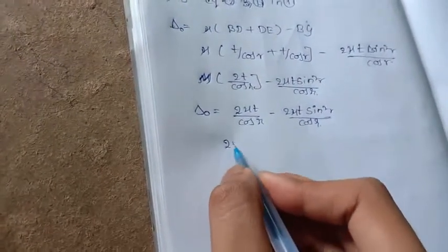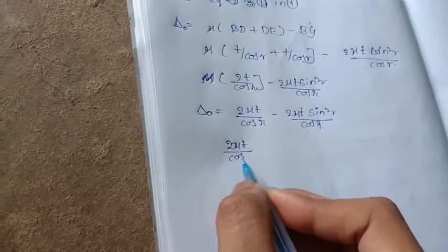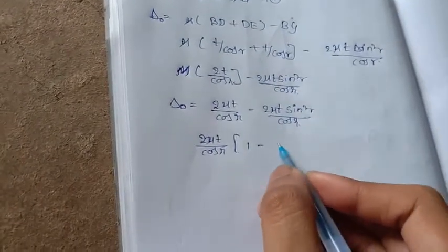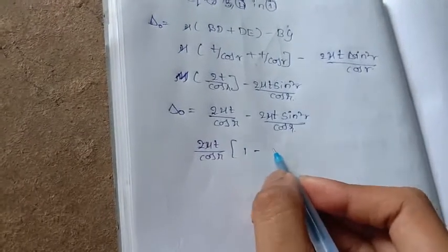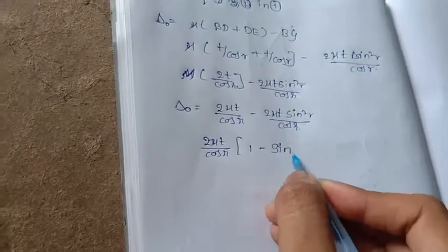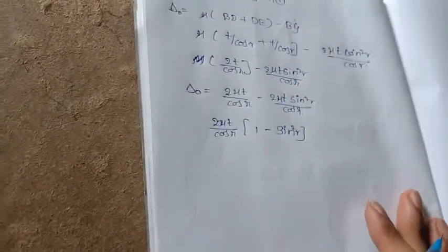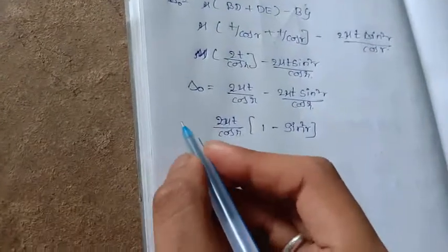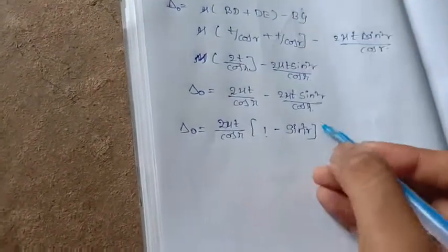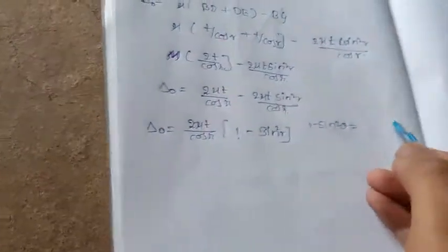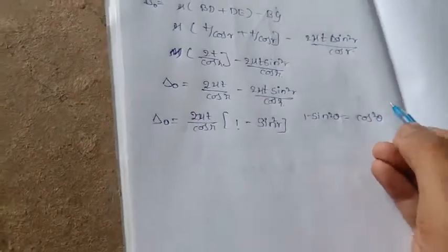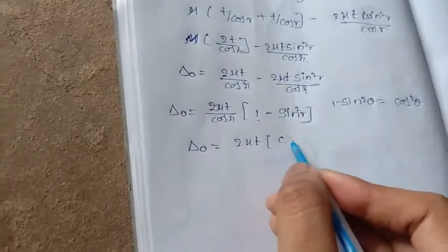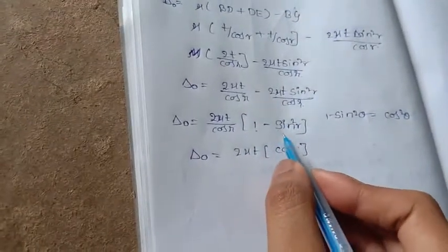From this I am going to take 2μT by cos R as common. Then the resultant value we are going to get is 1 minus sine square R. 2μT by cos R gets factored out. 1 minus sine square theta is also called as cos square theta. 2μT into cos R, one cos theta gets cancelled.